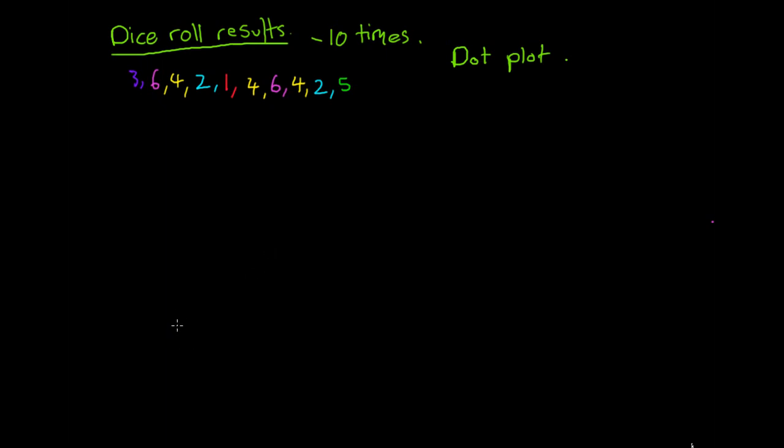Basically, with the dot plot, what we do is we want to construct a frequency table first. Or we can just go straight into our dot plot. So I think I might do it with the way where I show you a frequency table first. So over here I've got my result for my dice roll. Sorry there's a t in result but I'll just leave it without a t for a minute.